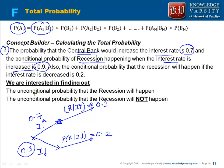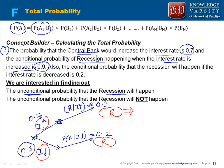They are asking us to compute the unconditional probability that recession will happen. Using the tree diagram, one node represents recession happening when interest rate is increased, and another node represents recession happening when interest rate is decreased. The probability of each node is the product of the branch probabilities. Using the formula, the probability of recession and interest rate increase happening at the same time is 0.7 multiplied by 0.9.